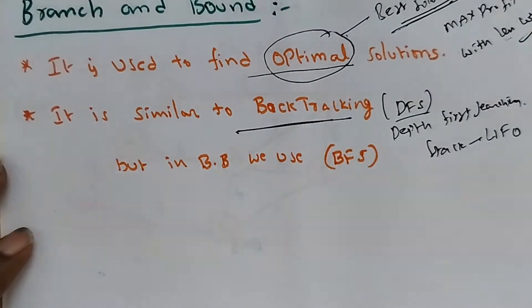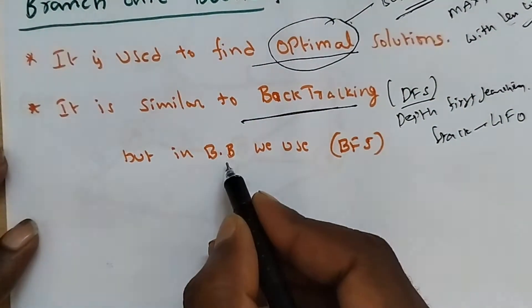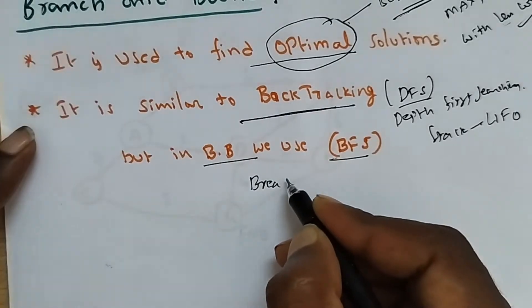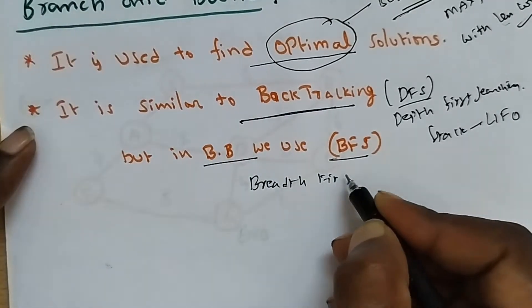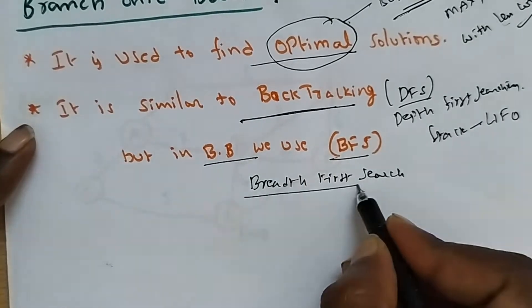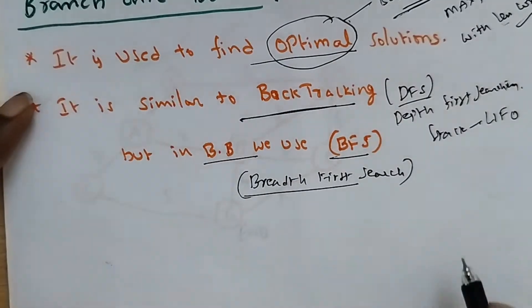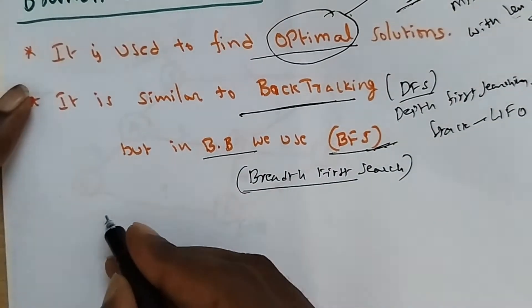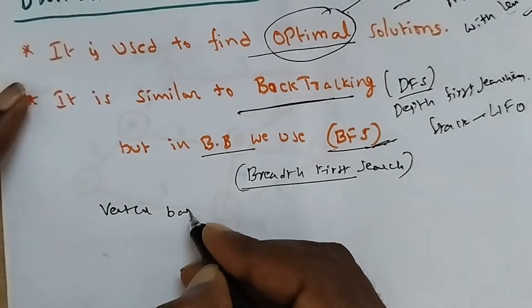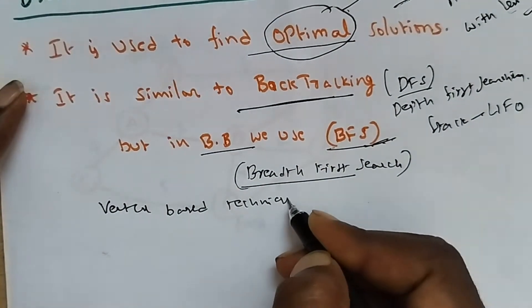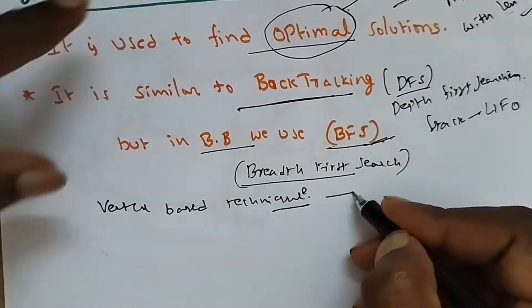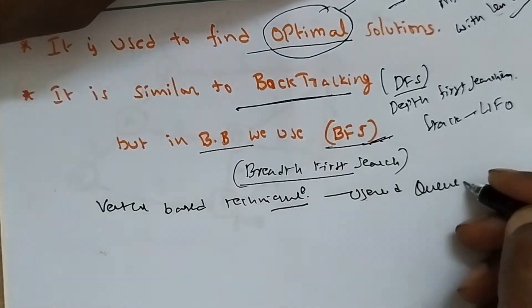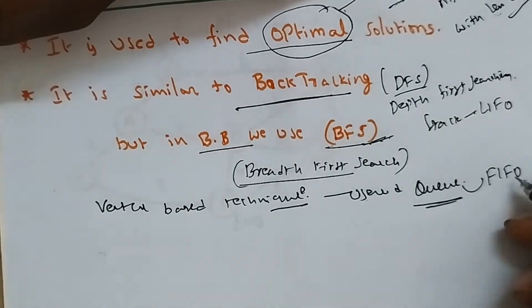In branch and bound, we use BFS — breadth first search. BFS is a vertex-based technique. It uses a queue, which is the FIFO method.